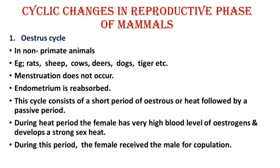The estrus cycle consists of a short period of estrus or heat followed by a passive period. During heat production in non-primate animals, the female has very high blood levels of estrogens and develops a strong sex drive.